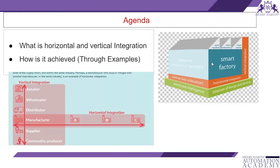We will try to understand horizontal and vertical integration and how they are achieved in industry organizations through various examples. Horizontal integration is about within the same manufacturer, while vertical integration means from retailer to wholesaler, distributor to manufacturer, supplier, and the community producer.